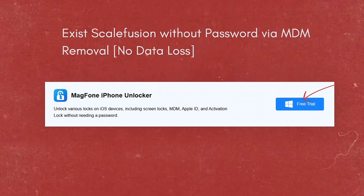The MagPhone iPhone Unlocker has many features for iPhone, iPad, and iPod Touch. It can help iPhone users get rid of MDM lock without a passcode and without data loss. In addition to deleting your MDM restrictions, MagPhone iPhone Unlocker can unlink Apple ID without a password, and it can also remove a screen passcode as well as a screen time passcode.